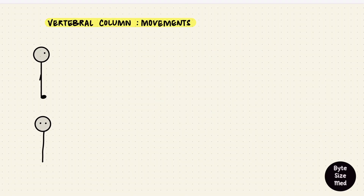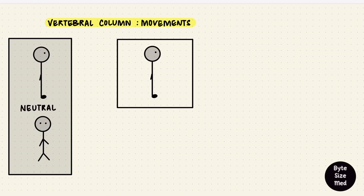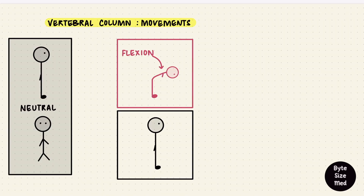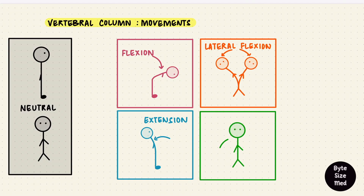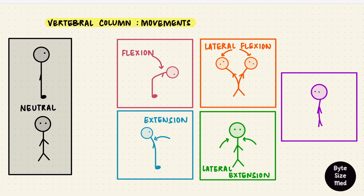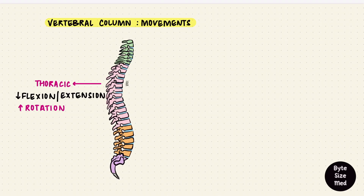Starting from a neutral spine: bending forwards is flexion, bending backwards is extension, and returning to the midline from flexion is also extension. Bending to either side is lateral flexion, and coming back from lateral flexion is lateral extension. Then there's rotation, which doesn't actually happen in all parts of the vertebral column. For example, flexion and extension are restricted in the thoracic region, but it allows the most rotation. While the lumbar vertebrae restrict rotation, they allow flexion and extension. This depends on factors like the angles between the articular facets and the fact that thoracic vertebrae have attached ribs.